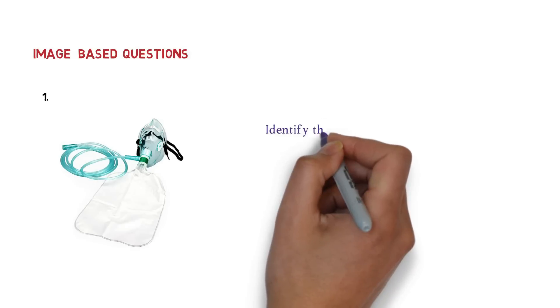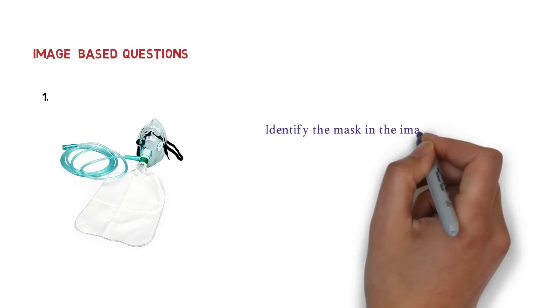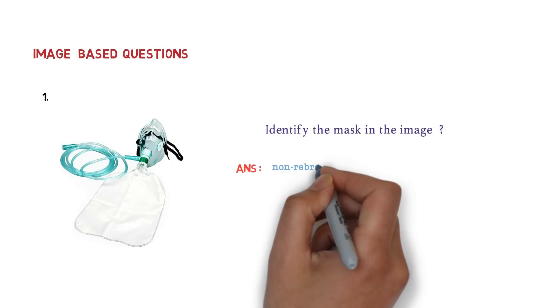First we are going to discuss the image-based questions, and then we will discuss the other questions. Our first question is: look over here, this is our image. Identify the mask in the image. The answer is non-rebreather mask.